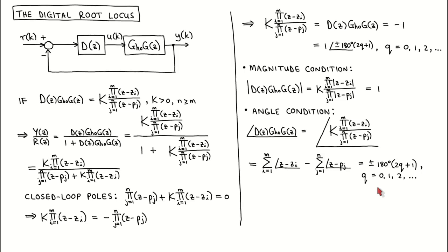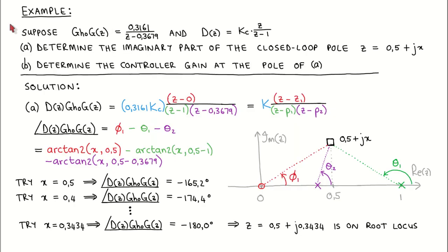Let's work through a simple example. We are given an equivalent discrete time plant and a controller described by a transfer function where the structure is specified but not the controller gain. In the first part we calculate the location of the closed loop pole with real part 0.5, and in the second part we calculate the corresponding controller gain. We write the loop transfer function in the required format, where the gain is a combination of the plant and controller gains, with the zero factor and first pole factor from the controller and the second pole factor from the plant.